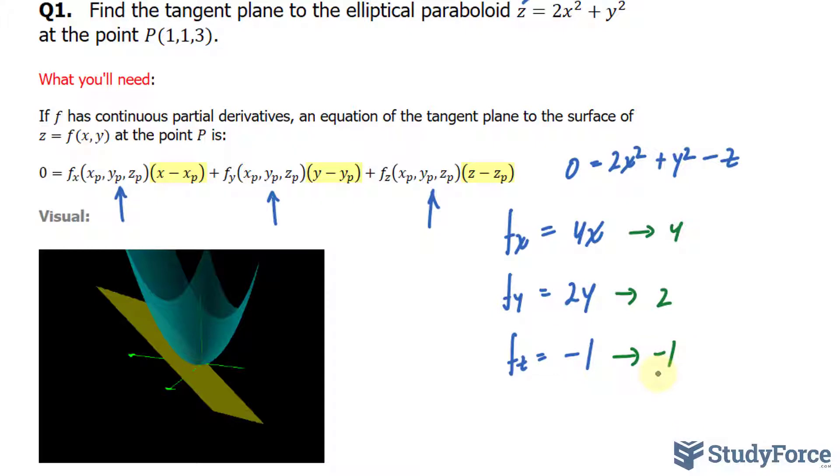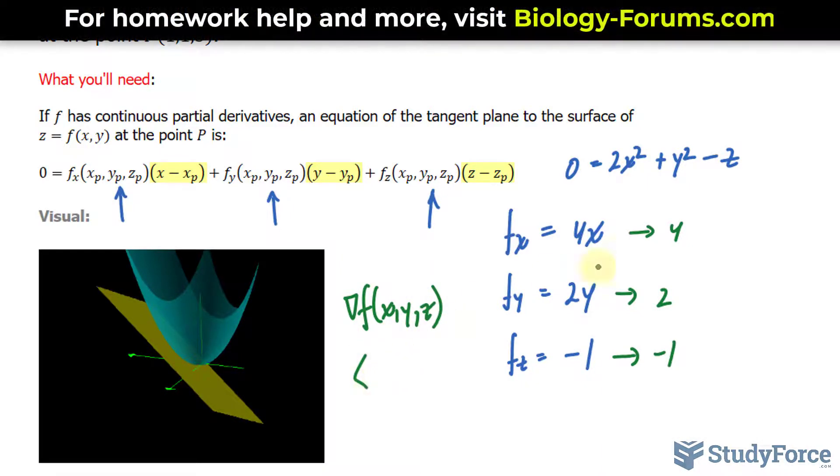So technically, what I just found is the gradient of our function at (x, y, z), and it equals (4, 2, -1).